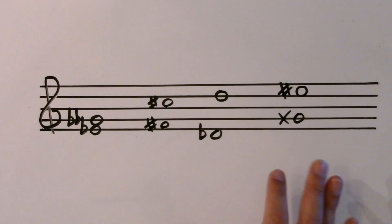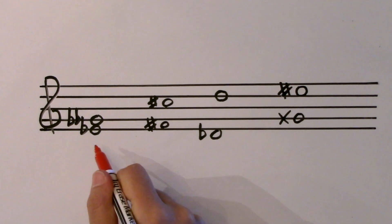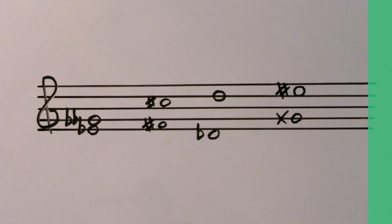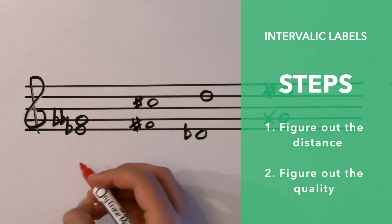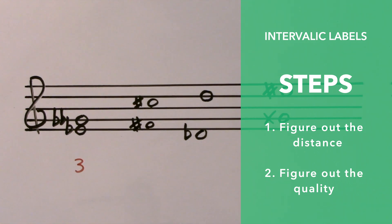Now let's practice labeling some chromatic intervals and some intervals within the new key signatures for level six. I've purposely written out some scary-looking intervals so we can do them together slowly. Let's start with this one — the easiest thing to do is figure out the distance. One, two, three — it's a third.